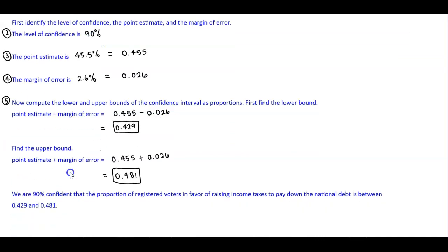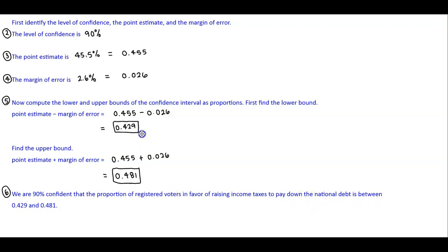We can say that we are 90% confident that the proportion of registered voters in favor of raising income taxes to pay down the national debt is between 0.429 and 0.481.